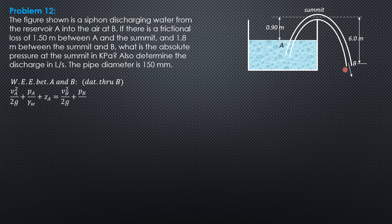equals velocity head at B, unknown, pressure head 0 because it is exposed to the atmosphere, plus elevation head 0, plus head loss between A and B, which is mentioned. Frictional loss of 1.5 meters between A and the summit, from here to the summit, then another 1.8 between the summit and B.